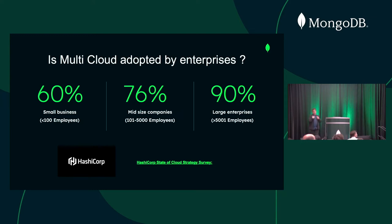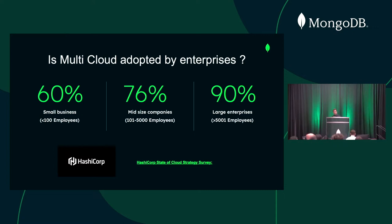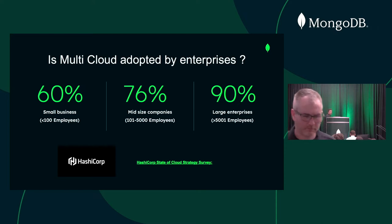This is from HashiCorp — it's not just my claim. How many of you are adopting a multi-cloud strategy using more than one cloud? And do you have complexity managing and encrypting data in a multi-cloud? Interesting — that's not that many hands. I would like to talk to you after the session and see what you're doing that solves that — maybe you already have a solution I don't know about.